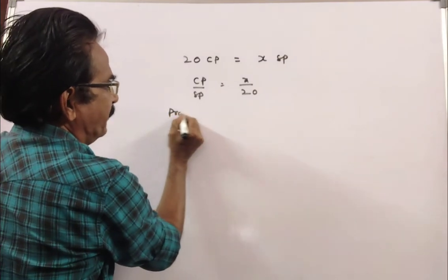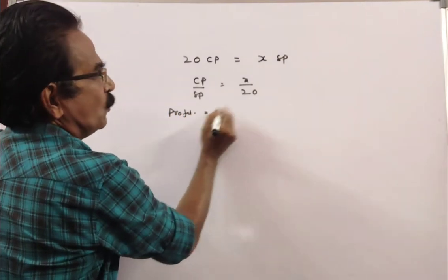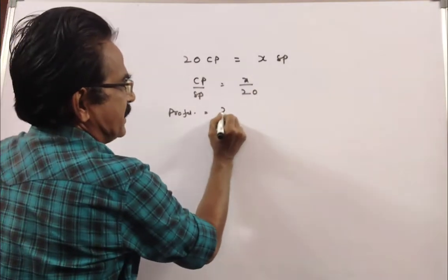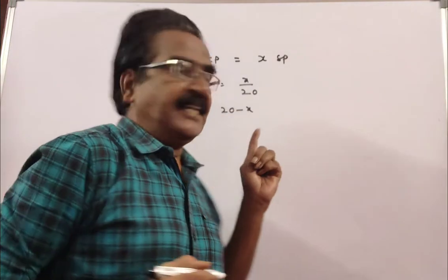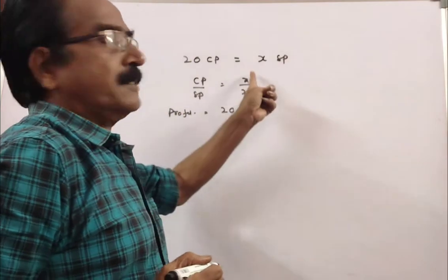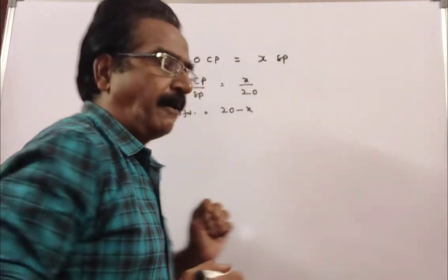Profit is equal to selling price minus cost price, which is 20 minus X. The profit is 20 minus X and the cost price is X. Let us find the profit percent.